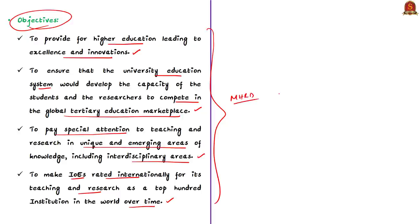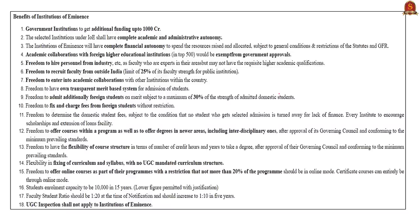Regarding benefits, government institutions will get additional funding of up to one thousand crore rupees. The selected institute will have complete academic, administrative, and financial autonomy. Academic collaborations of Institutions of Eminence with the top 500 foreign higher educational institutions would be exempt from government approvals. Public institutions under the scheme will also have the freedom to recruit 25 percent of their faculty from outside India.